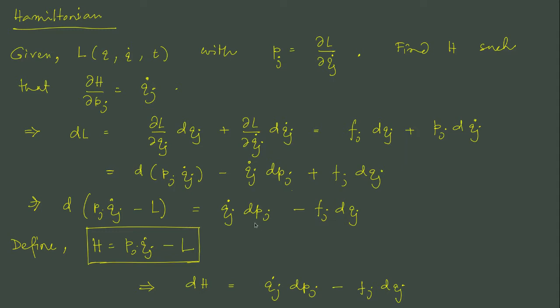It immediately gives us that we define h to be pj qj dot minus L. Then del h del pj will give us qj dot and del h del qj will give us minus fj. This is after the definition, we get the dh in this form.